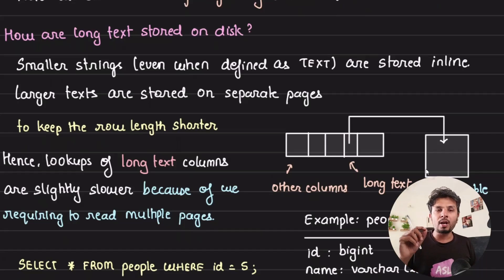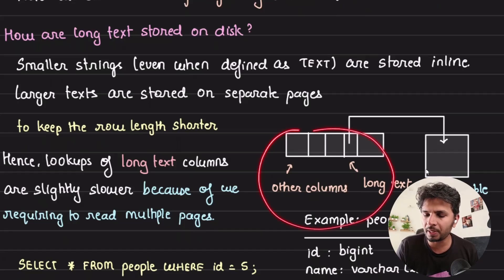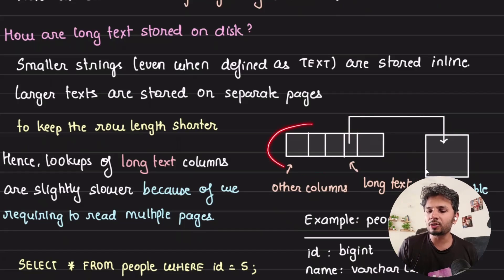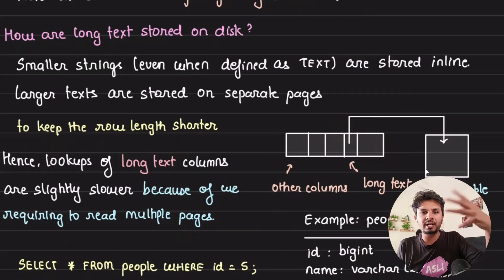This way, if you are storing large text and trying to get it, your lookups are slightly slower because it would have to read multiple disk pages. You try to keep the row smaller by storing the reference, but now you have to do multiple disk page reads. Still, you need to store large values for bio, description, blog data, because keeping the row length shorter is of higher priority.